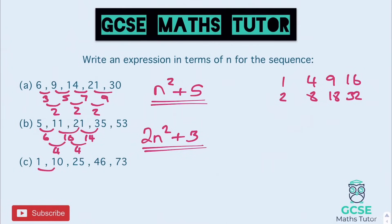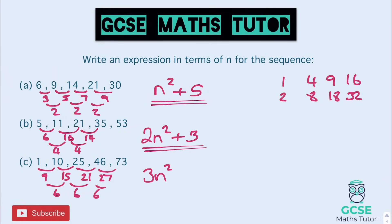And the last one. First difference is 9, then 15, then 21, then 27. That gives us a second difference of 6, which means it's 3n squared. Back to the square numbers: 1 times 3 is 3, 4 times 3 is 12, 9 times 3 is 27, 16 times 3 is 48. To get from 3 to 1, we take away 2. 12 to 10, we take away 2. So it's all take away 2 — it's 3n squared minus 2. And that's how you find the nth term of a quadratic sequence.